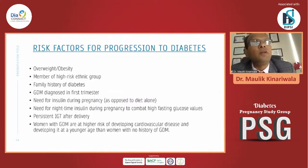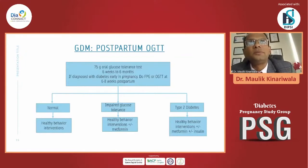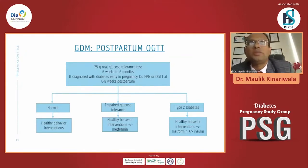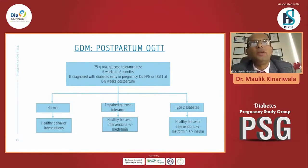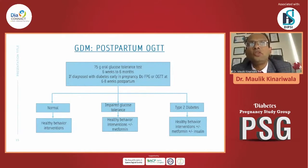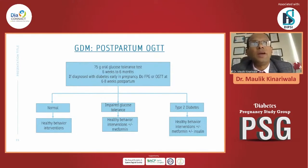Remember, women with GDM have a higher risk of developing cardiovascular disease at a younger age compared to women without GDM. That's why guidelines recommend assessment of postpartum glycemic status. We should ideally perform a 75g oral glucose tolerance test at the end of six to eight weeks after delivery. If the OGTT is normal, the patient still requires lifestyle modification, healthy behavior, and close follow-up every year.